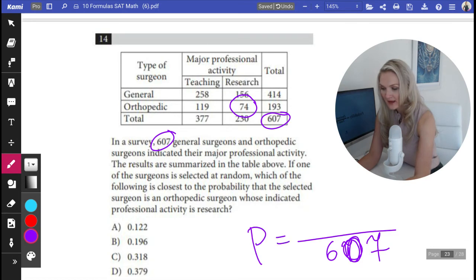My probability. And now they say, which of the following is close to the probability that the selected surgeon is an orthopedic surgeon whose indicated professional activity is research? 74. And when you divide 74 by 607, you get A.